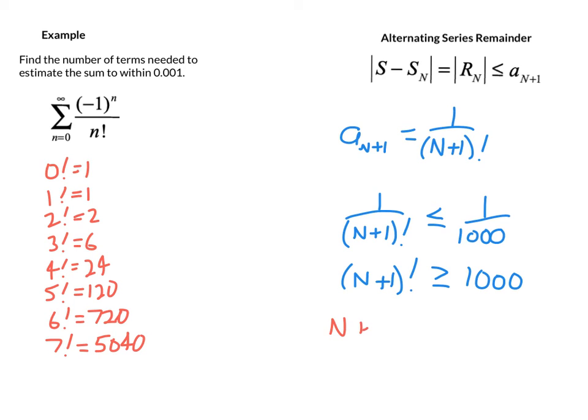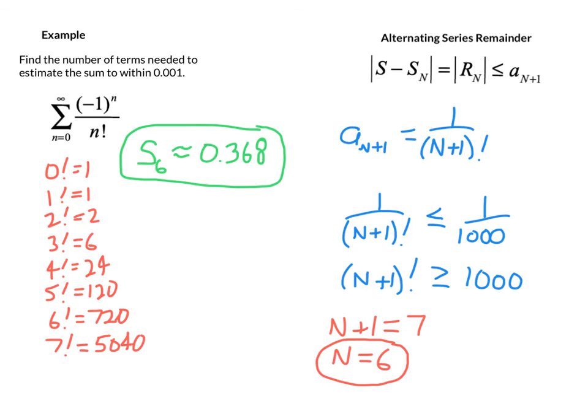So that means that n plus 1 equals 7, and in this case, I need a total of just 6 terms in order to get the estimate to the desired accuracy. If we figure out the partial sum of the first 6, you can do it on your calculator, the sum of the first 6 turns out to be 0.368 roughly, and we know that's within 0.001 thanks to the alternating series remainder.